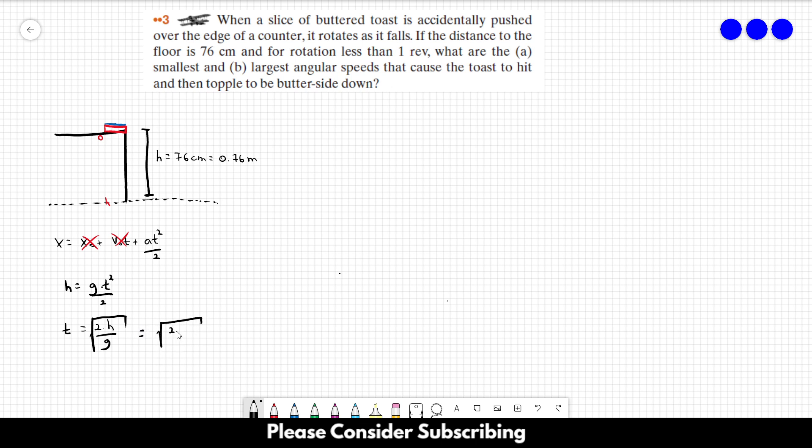This is going to be the square root of two times 0.76 over 9.8, and this gives us 0.394 seconds. So that's the time that the toast is falling.